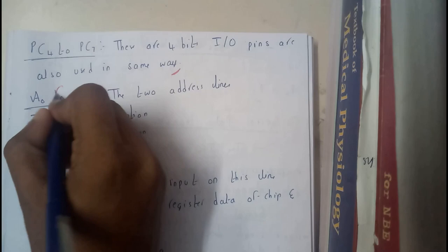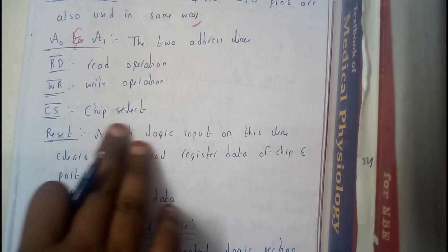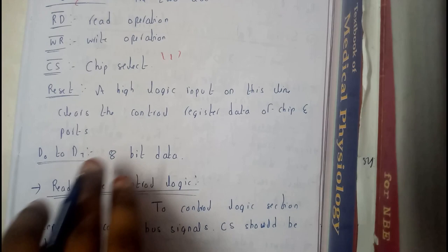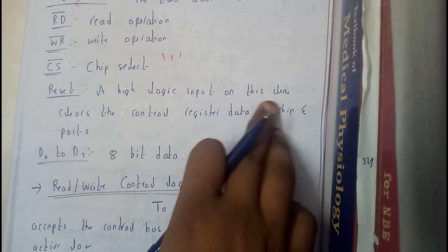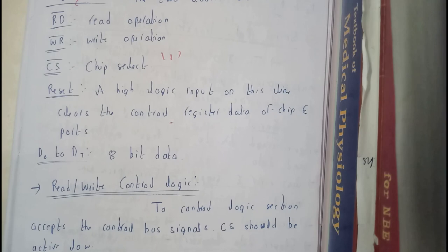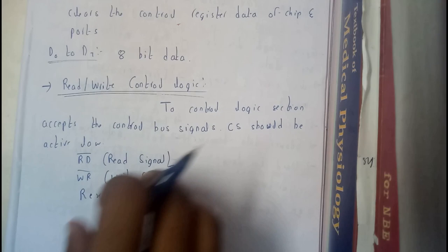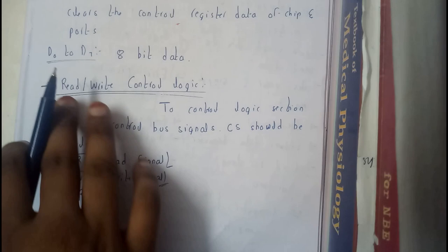So A0 to A1, A0 and A1, those are nothing but the two address lines. RD bar, read operation. WR bar, write operation. CS, chip select, that should always be one to activate the working of 8255A. Reset, a high logic input on this signal clears the control registers. That's what I have told, the operation will not be done, it becomes 0 directly. D0 to D7, that is an 8 bit data line which can transfer 8 bits at a time. So till here we are done with our pin configuration.